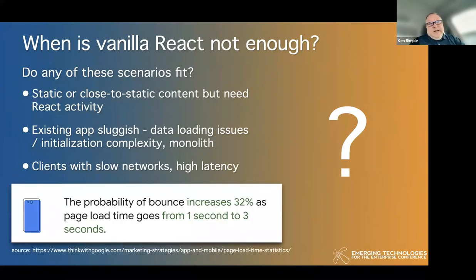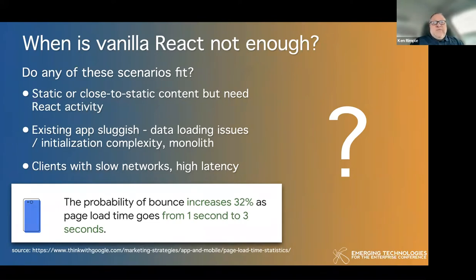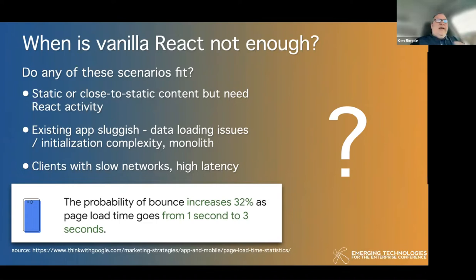Google has a statistic that says the probability of bouncing — leaving a site once you visit — increases 32% as page load time goes from one second to three seconds. Google's performance team talks a lot about these metrics, especially on mobile. People will leave your site if it takes seven seconds to load. It's important to find ways to speed things up.